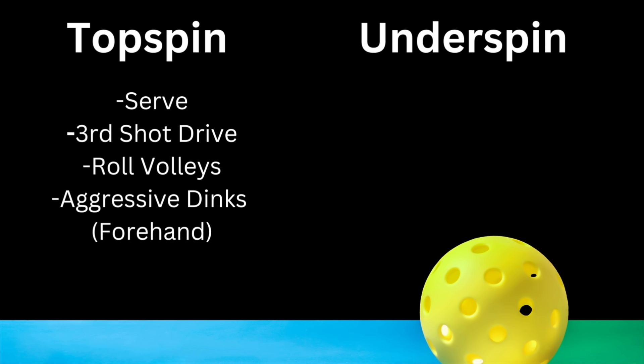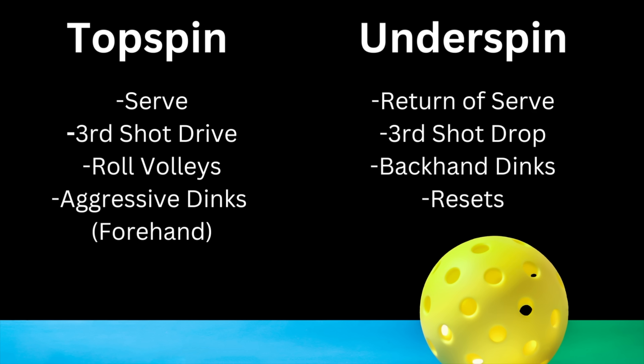Now let's look at the common times you're going to see underspin used on the court. Return of serve is one, third shot drop, backhand dinks, and resets. In general, underspin is going to allow us to soften shots, take pace off the ball, and get the ball to float a little bit deeper — like on a return of serve.